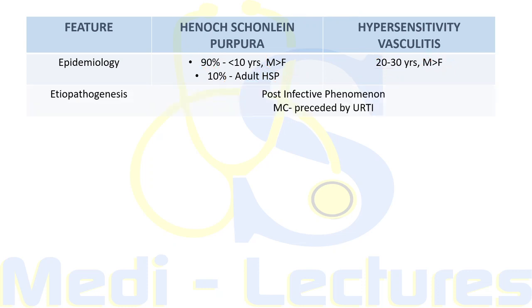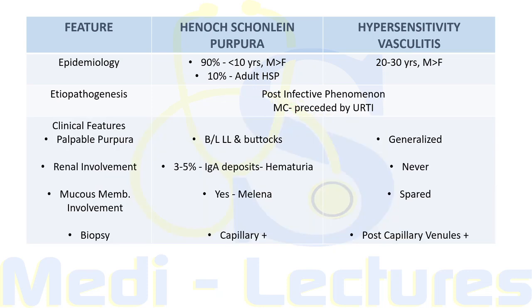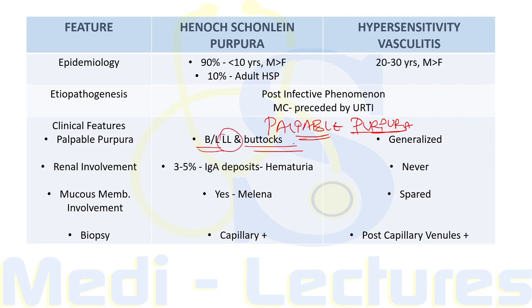Both conditions are usually due to a post-infective phenomenon, most commonly preceded by an upper respiratory tract infection. The most common and important clinical feature is palpable purpura, but distribution differs: in HSP, there is bilateral lower limb and buttock involvement; in hypersensitivity vasculitis, the involvement is generalized. Renal involvement is seen in HSP — in three to five percent of patients there are IgA deposits leading to hematuria — but not in hypersensitivity vasculitis.